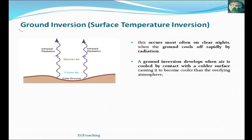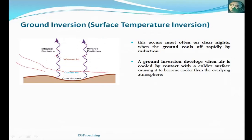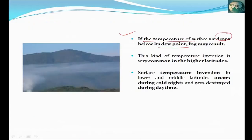Now let's look at the types of inversion. The first is ground inversion. At night, infrared radiation is emitted outward from the ground, so the ground and the air near it become cold. This creates cool air near the surface with a warm layer of air above — a ground inversion.